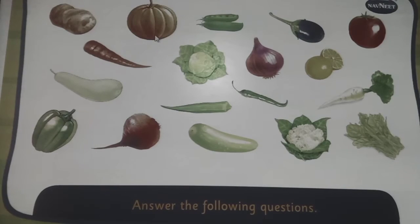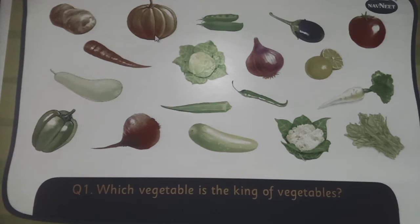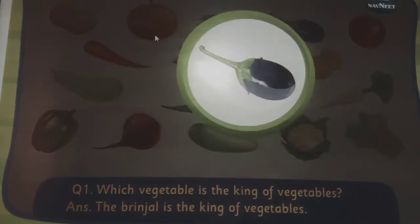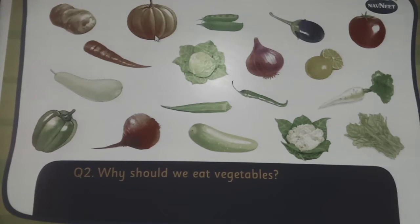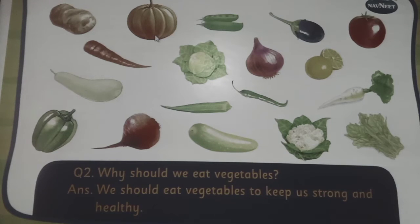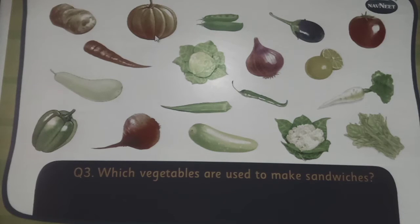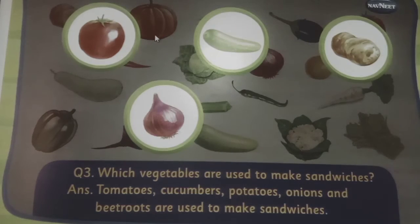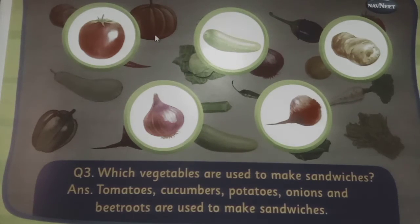Answer the following questions. Which vegetable is the king of vegetables? The brinjal is the king of vegetables. Why should we eat vegetables? We should eat vegetables to keep us strong and healthy. Which vegetables are used to make sandwiches? Tomatoes, cucumbers, potatoes, onions and beetroots are used to make sandwiches.